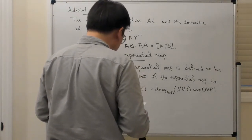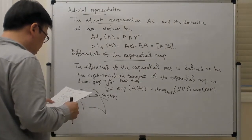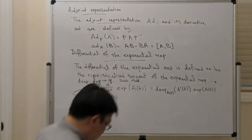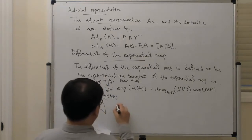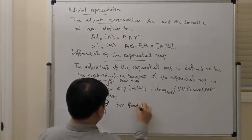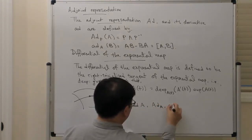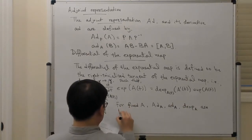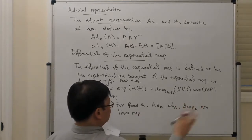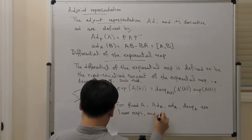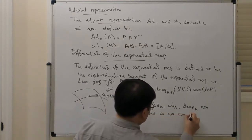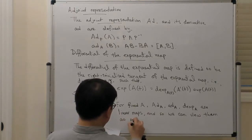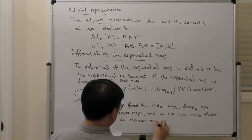You have this right trivialization of the exponential map, which I call the differential of the exponential map. It turns out that for Big Ad, little ad, as well as this dexp map, they're all linear maps. For fixed A, Ad A, little ad A, and dexp A are linear maps when they act on something else — so we can view them as matrices acting on the Lie algebra.